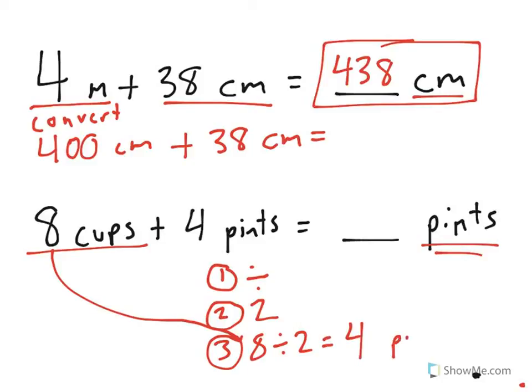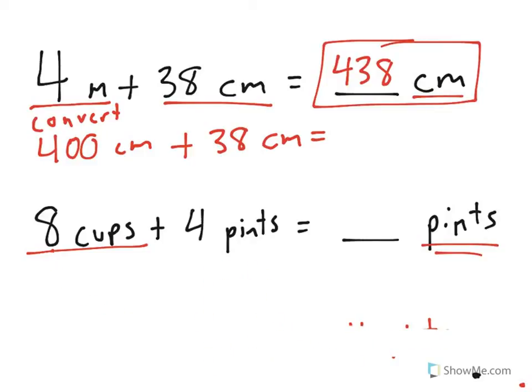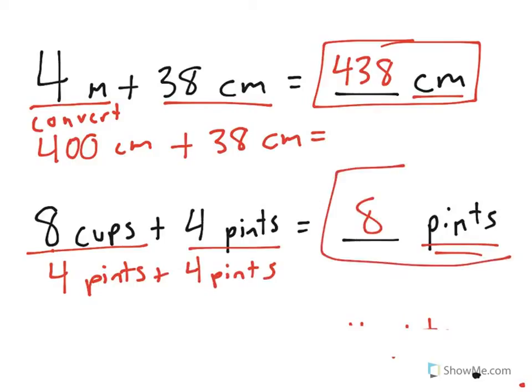So, 8 cups is equal to 4 pints. And when I erase to get this out of the way, so it's easier to solve the problem, we could see that 4 pints plus 4 more pints is equal to a total of 8 pints for the correct answer.